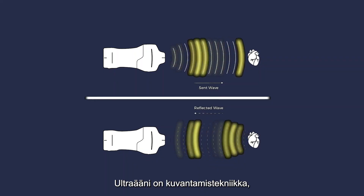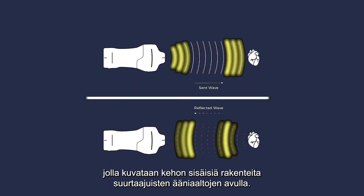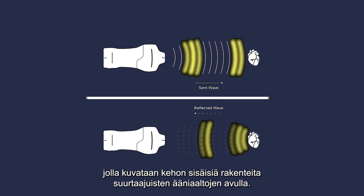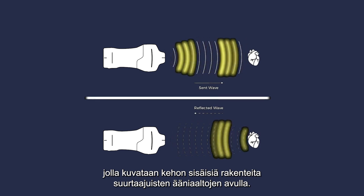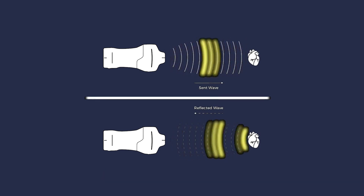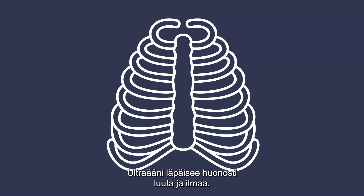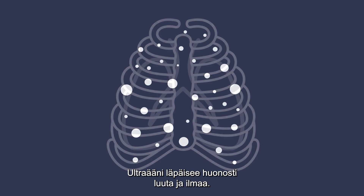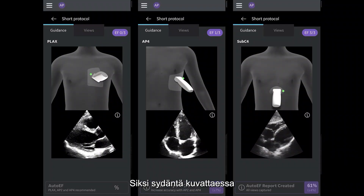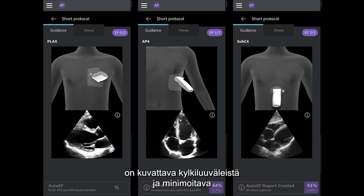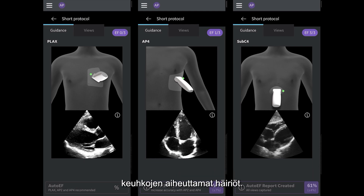Ultrasound is an imaging technique used to image structures inside the body using high-frequency sound waves. Ultrasound does not travel well through bone or air, so when scanning the heart, we need to scan within the intercostal spaces and minimize lung interference.